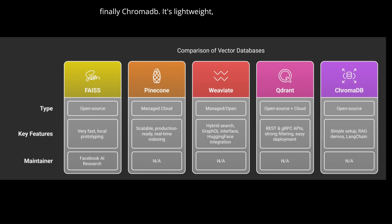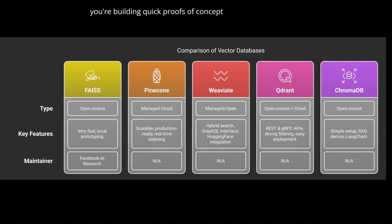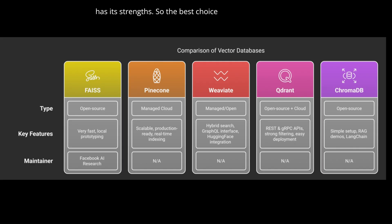And finally, ChromaDB. It's lightweight, easy to use locally, and very popular in the LangChain and RAG demo community. If you're building quick proofs of concept or educational projects, Chroma is fast and flexible. Each of these tools has its strengths, so the best choice depends on your project's scale, complexity, and deployment needs.